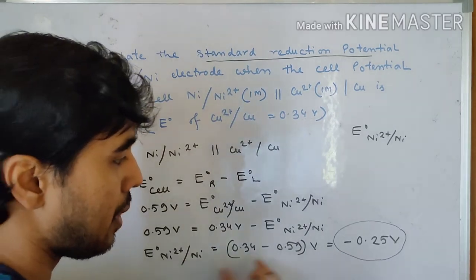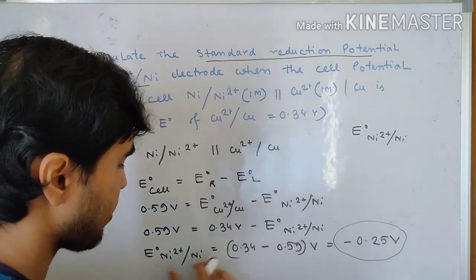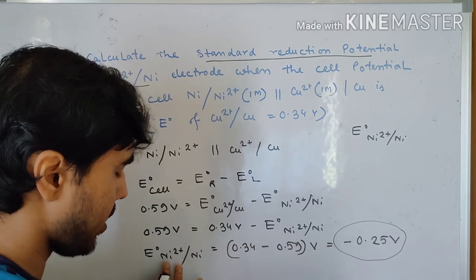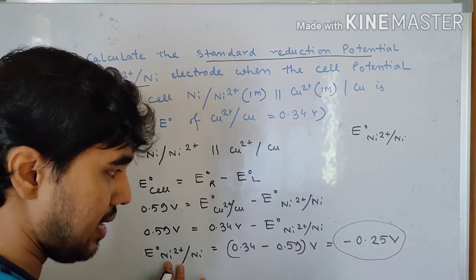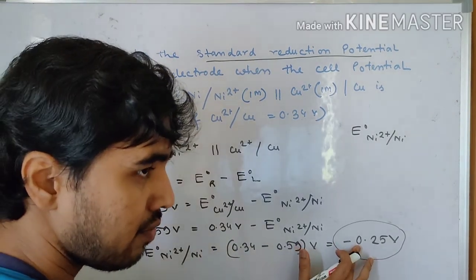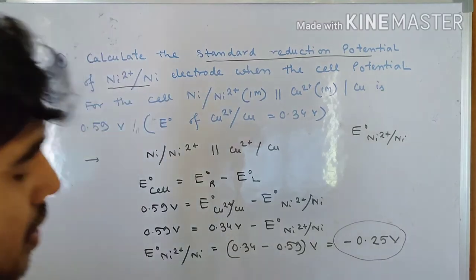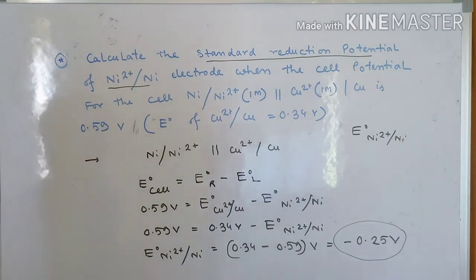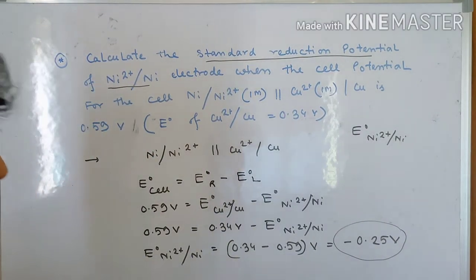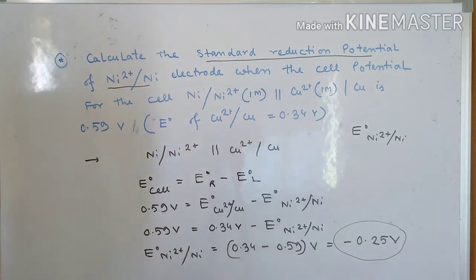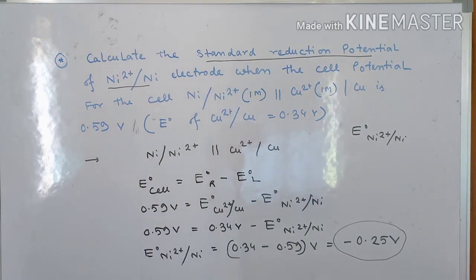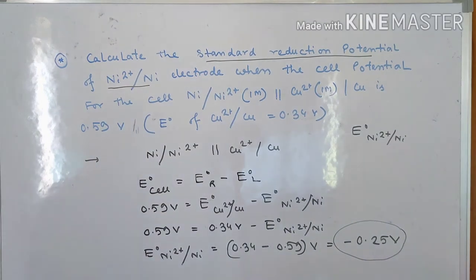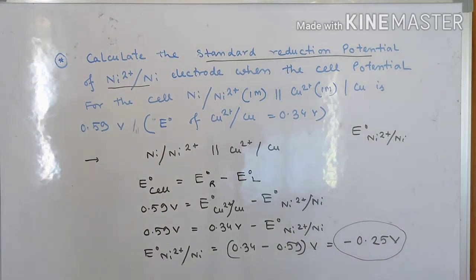Since the result is a negative sign, we can say the reduction potential of nickel is negative. So the tendency to accept electrons will be less, and the tendency to lose electrons will be more. This numerical tells us all these details about how to understand the cell representation and accordingly calculate the values.